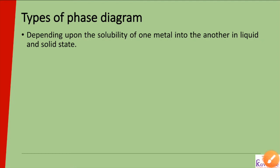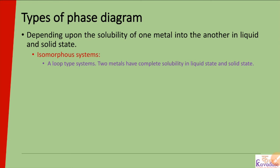The next topic is types of phase diagrams. Depending upon the solubility of one metal into another metal in liquid and solid state, we have classified phase diagrams. The first one is the isomorphous system, also known as the loop type of system. In this system, two metals have complete solubility in liquid state as well as in solid state.